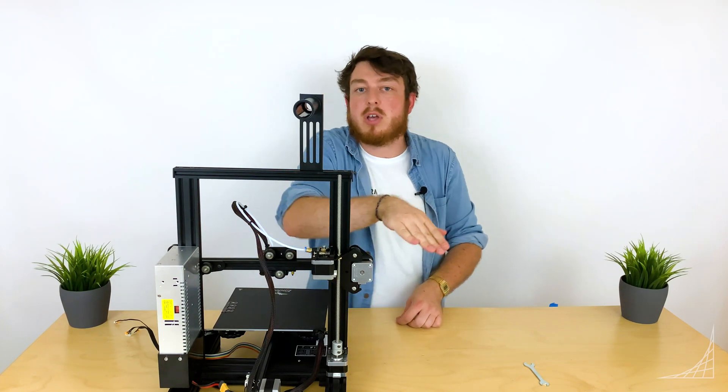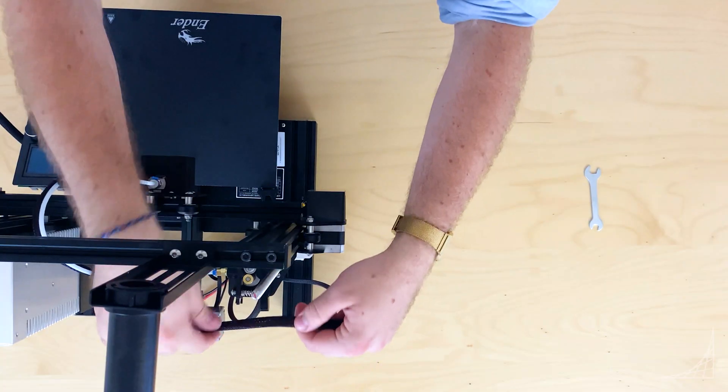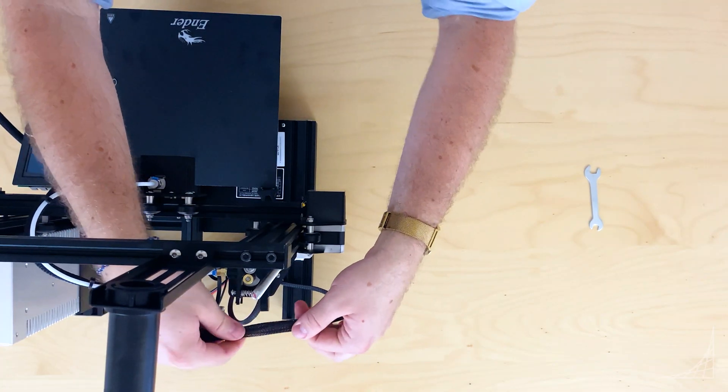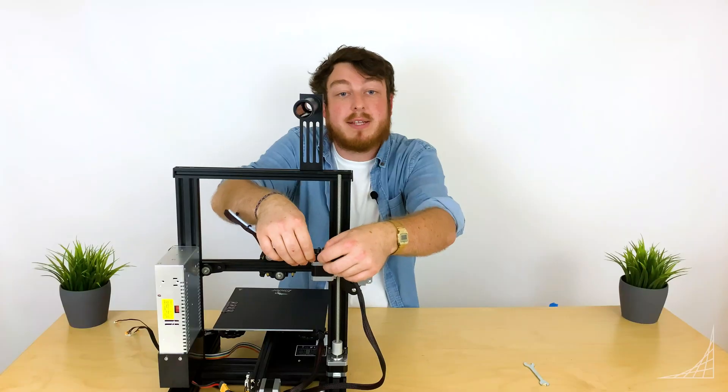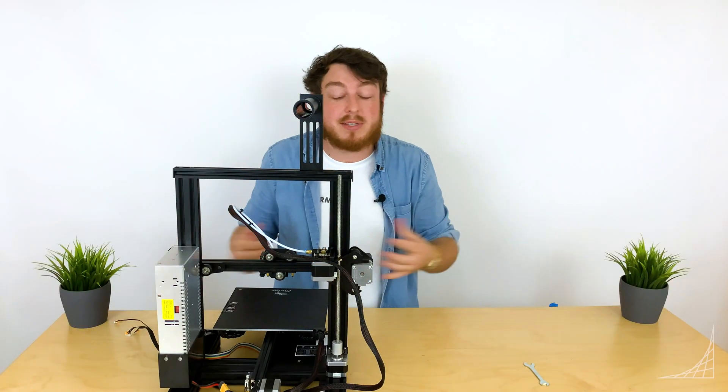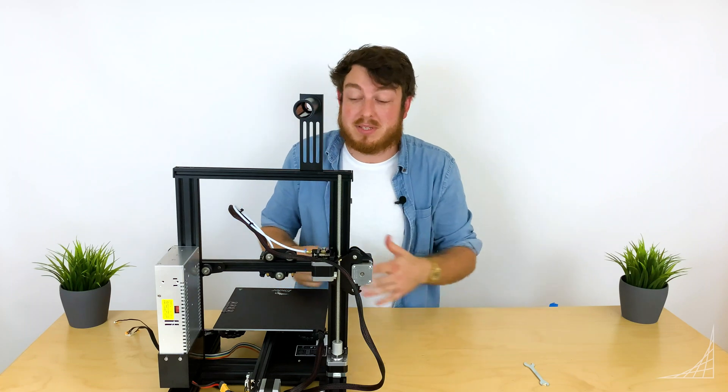To finish it off, we're going to grab the little loom and push it into these little clips right next to our extruder. That's going to keep everything nice and organized so when everything is printing you don't get any mistakes.